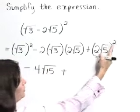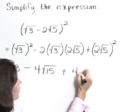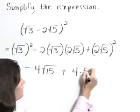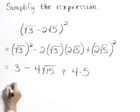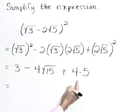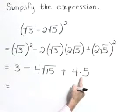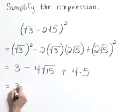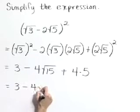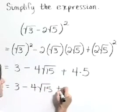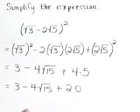Remember to apply this 2 to both factors. 2² is 4, (√5)² is 5. Let's continue to simplify by multiplying. So let's write our next step as 3 - 4√15 + 20.